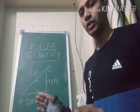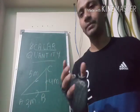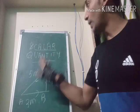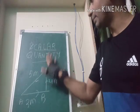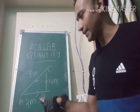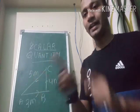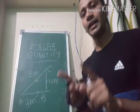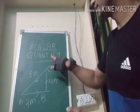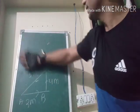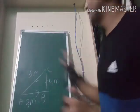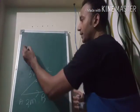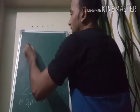Distance does not depend on direction — whether you move clockwise or anti-clockwise it remains the same. A quantity which depends only on magnitude and is independent of direction is called a scalar quantity.